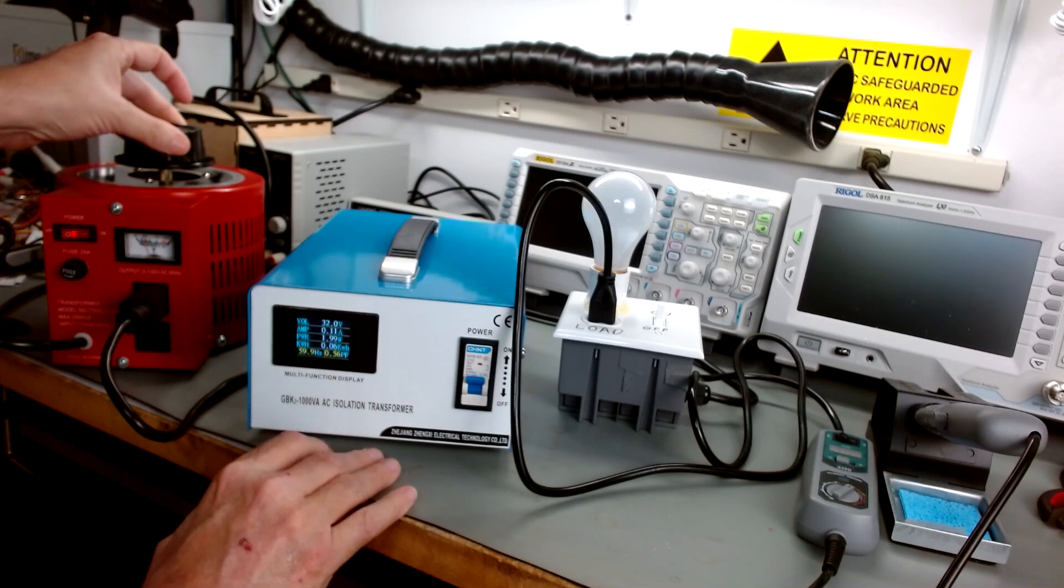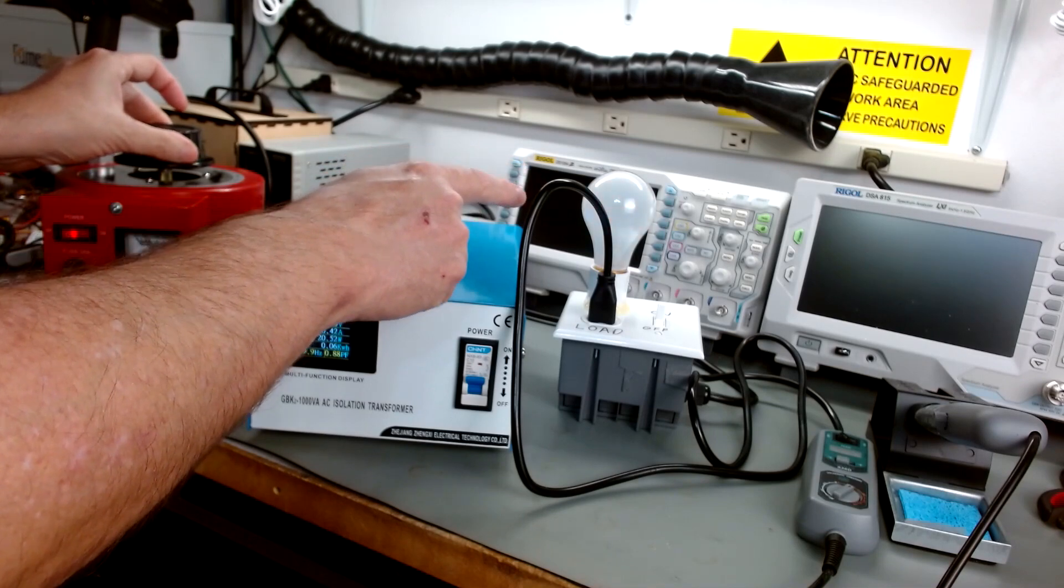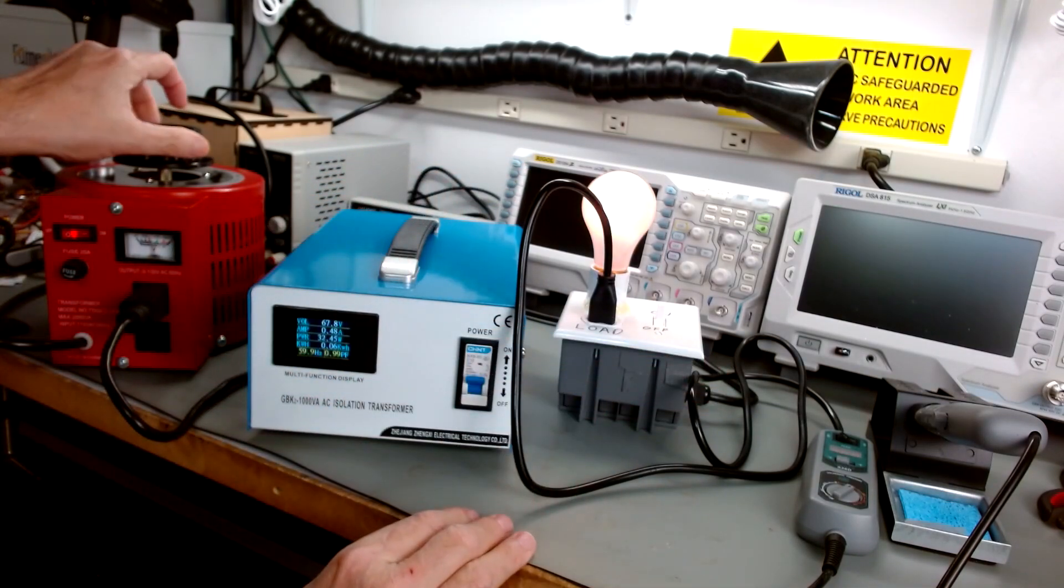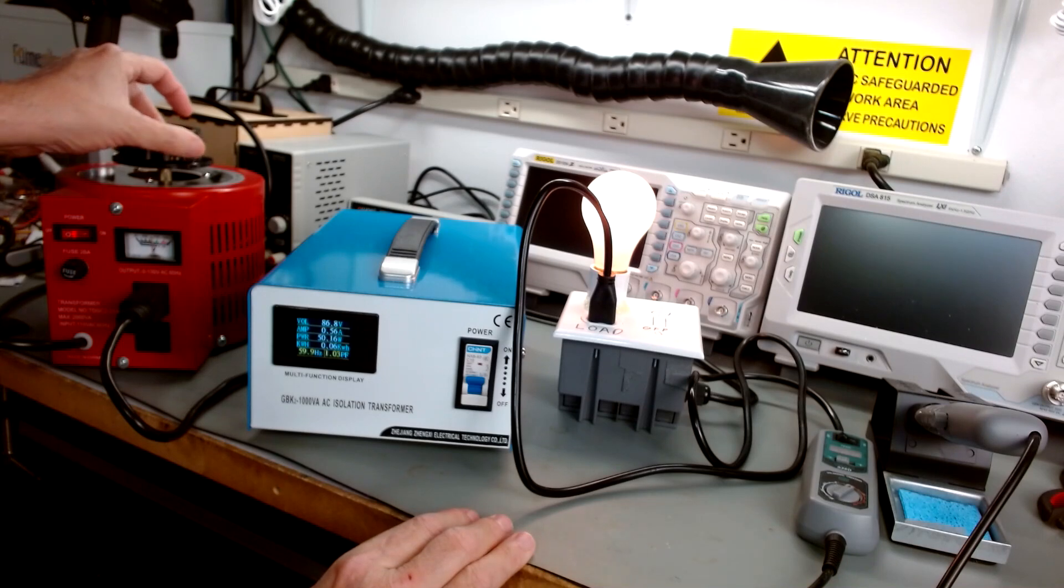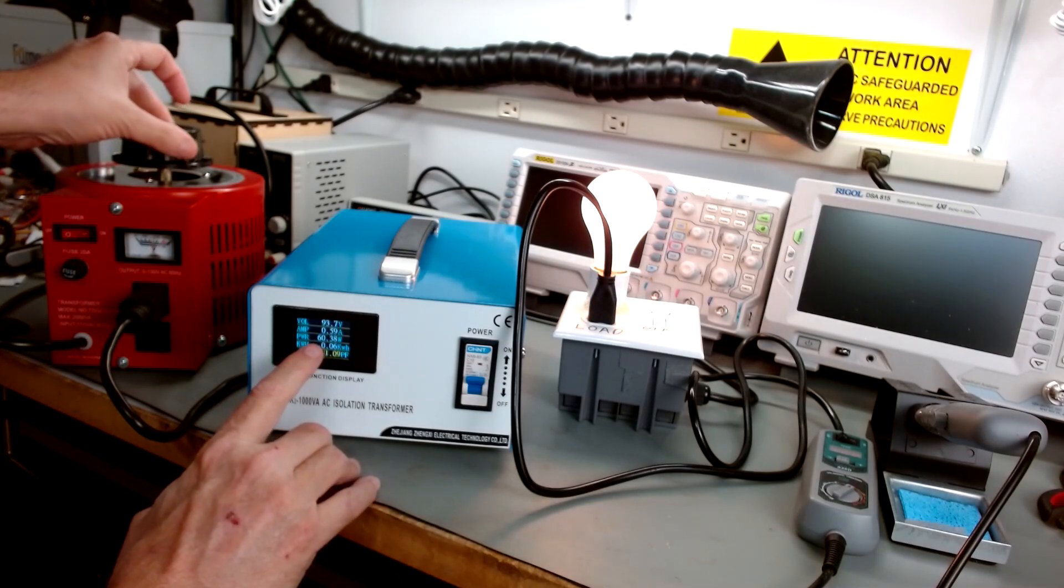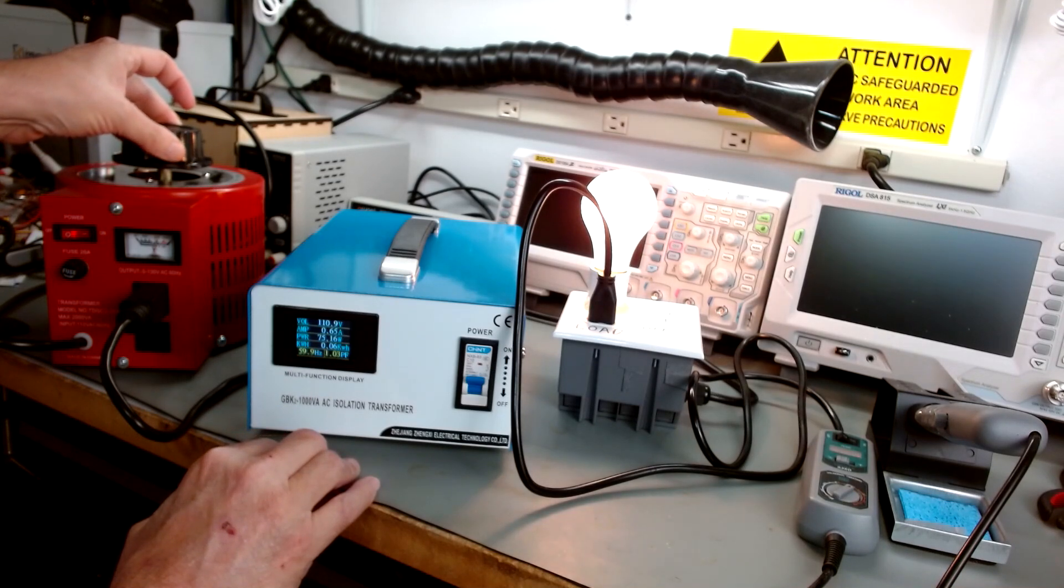So if I start bringing the voltage up, what's going to happen is the current is going to start coming up. Voltage is going to start coming up. The dim bulb is going to start lighting because there's a lot of current being drawn. And I can adjust my voltage from the Variac very accurately right here. I can bring it up, say, 120 volts, let's say.